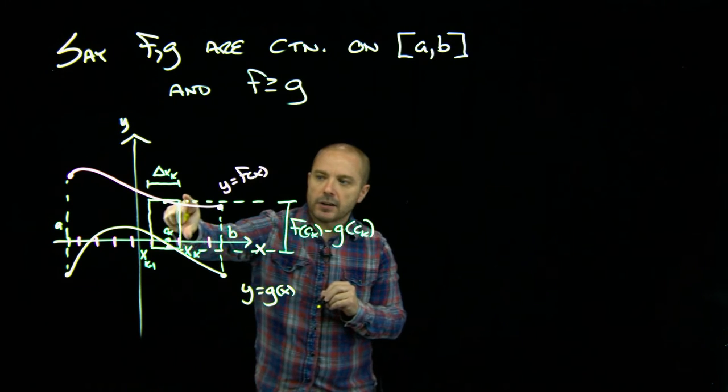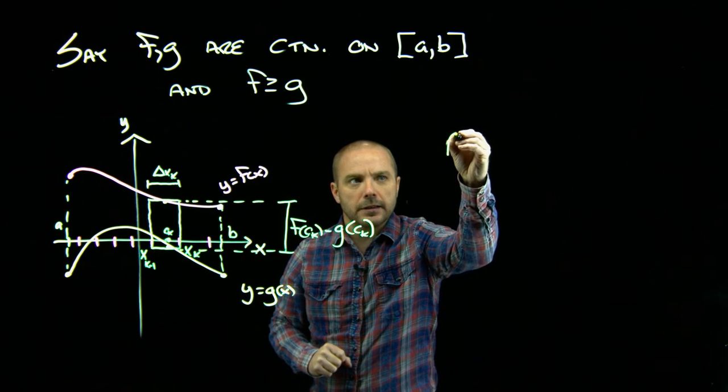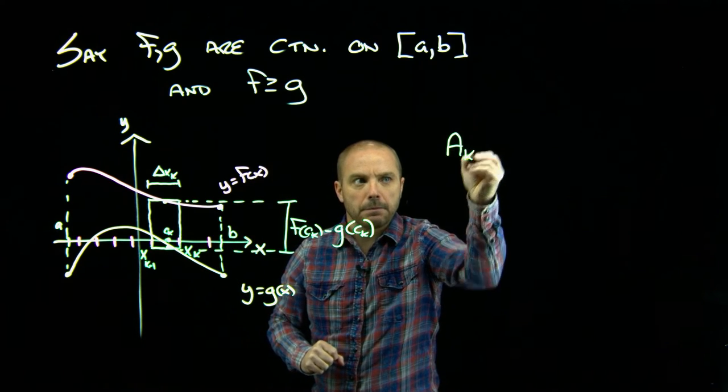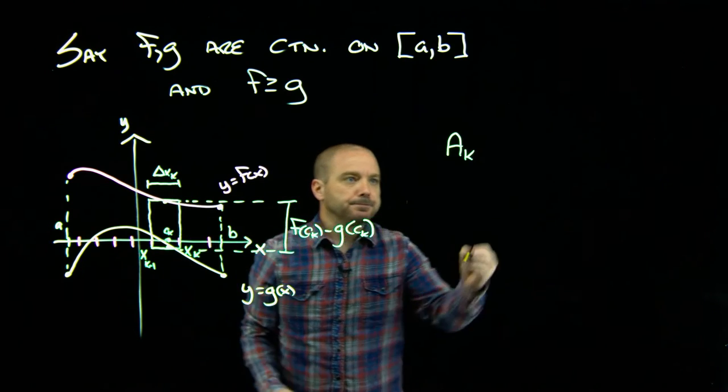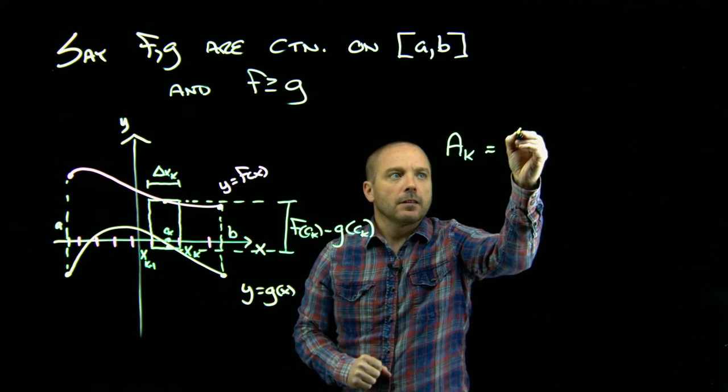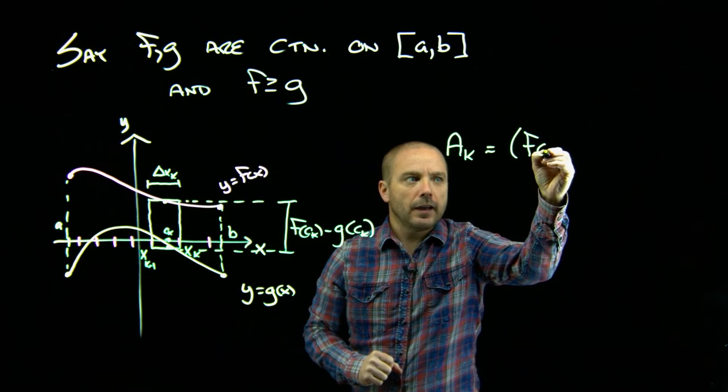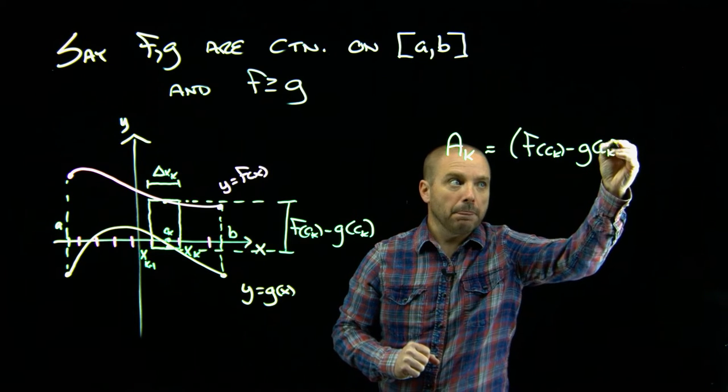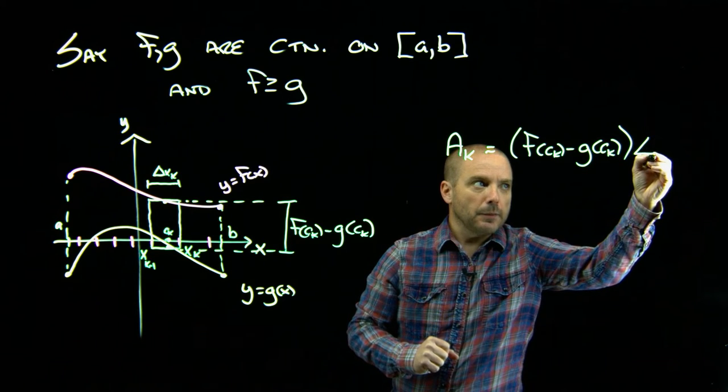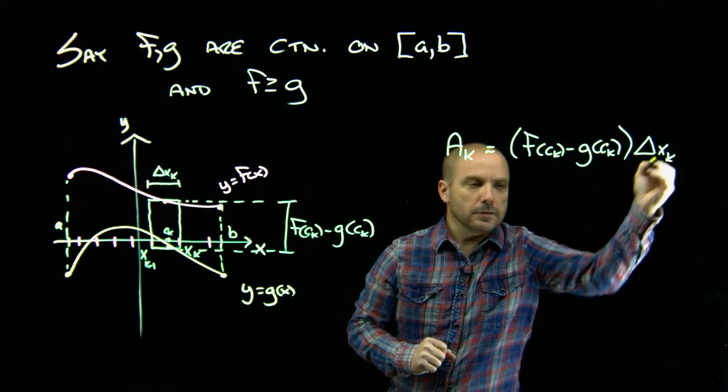So what is the area of this rectangle? Well, it's the kth rectangle. I'm gonna call it a sub k. And it's just a rectangle, so it's base times height. The height there is our f at c sub k minus our g at c sub k times the width, which is delta x sub k.